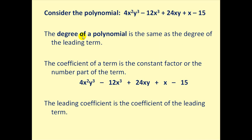Considering the same polynomial, the degree of a polynomial is the same as the degree of the leading term. Remember, this is the leading term. It had degree five. Therefore, the degree of the entire polynomial is degree five.